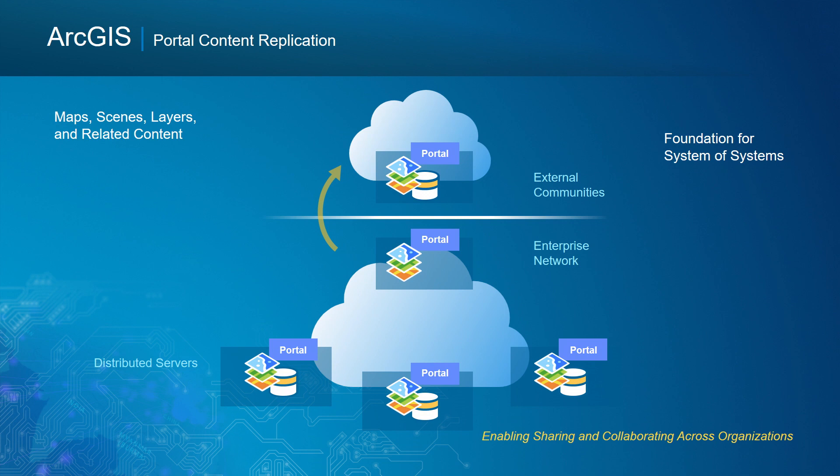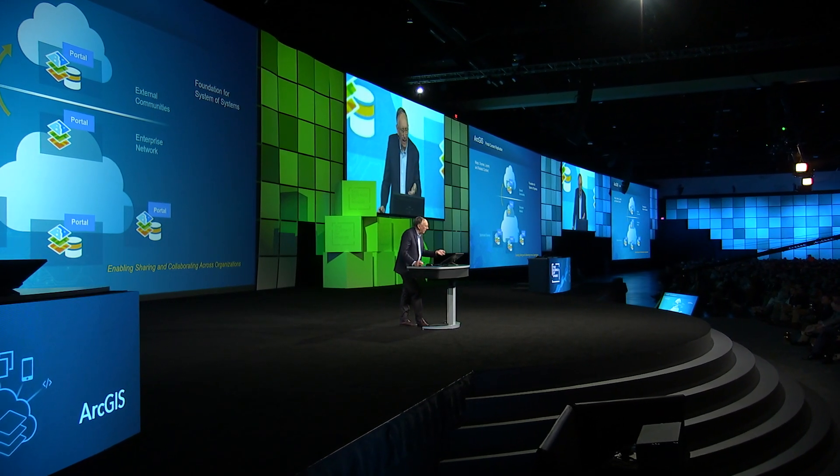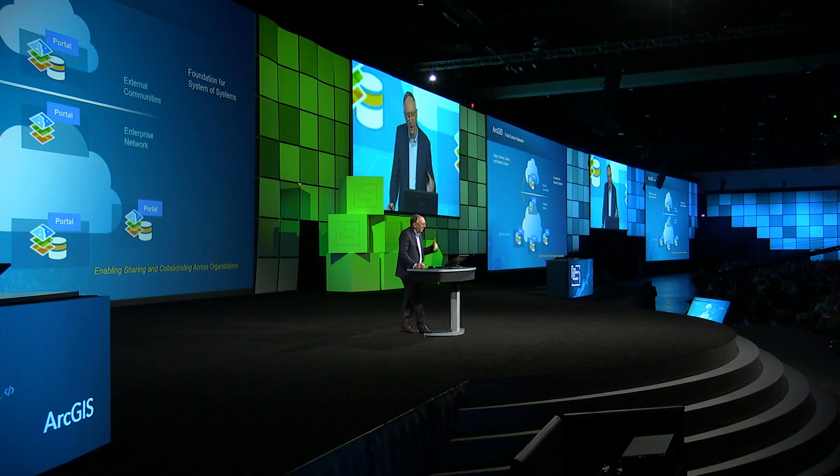Portal-to-portal replication means being able to take items from one portal in one department and share them with another department and its related content. You can think of having multiple departments with a portal of portals for the whole city, whole agency, or multiple organizations. And then replicating outward to external communities — like the GIS Hub notion — web maps, scenes, and layers automatically. I set up some rules, and we can take distributed and integrated GIS to scale.